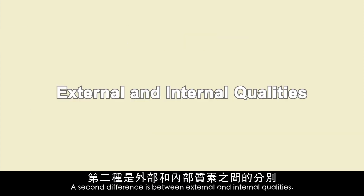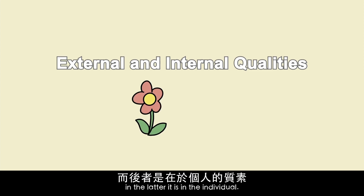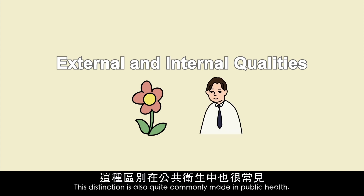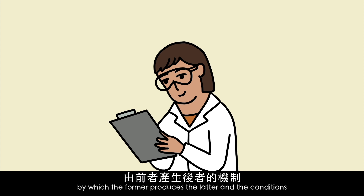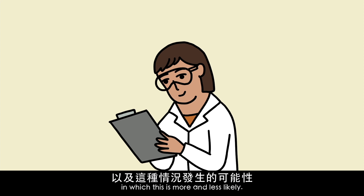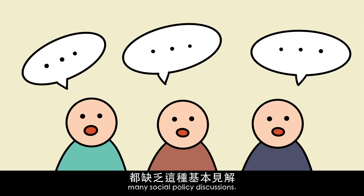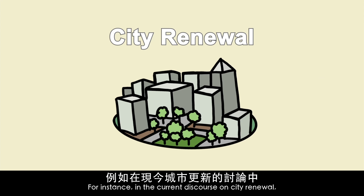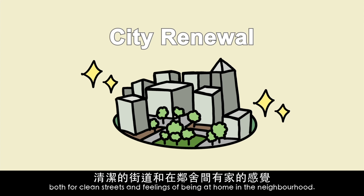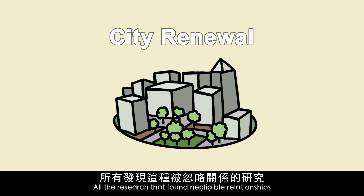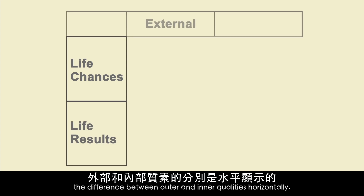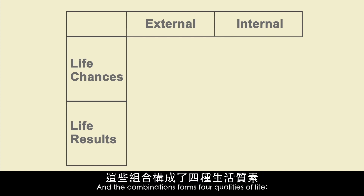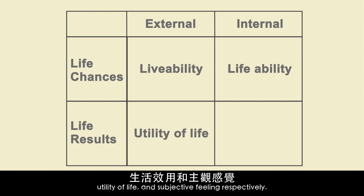A second difference is between external and internal qualities. In the first case, the quality is in the environment; in the latter, it is in the individual. This distinction is also quite commonly made in public health, where external pathogens are distinguished from inner afflictions. For instance, in the current discourse on city renewal, the phrase 'quality of life' is used both for clean streets and the feeling of being at home in the neighborhood. The combination of these two dichotomies yields a fourfold matrix. The distinction between chances and results is presented vertically, and the difference between outer and inner qualities horizontally. The four qualities of life that result are: livability, lifeability, utility of life, and subjective feeling.